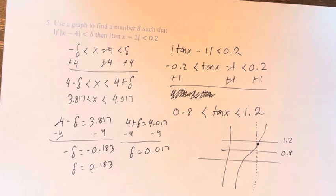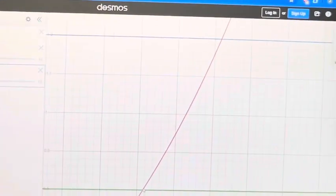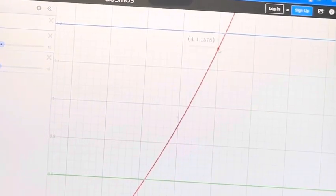Just to visualize this, this is the point where x equals 4 on the function. See, it's really close to 1.2, and it's a lot further from 0.8, which is way down at the bottom.